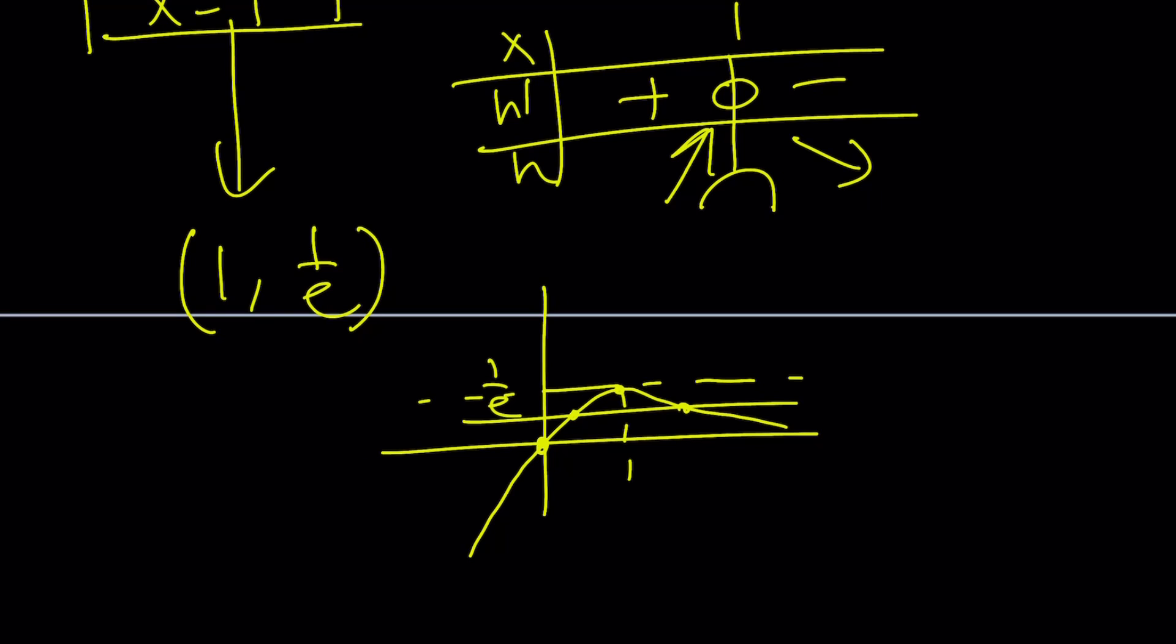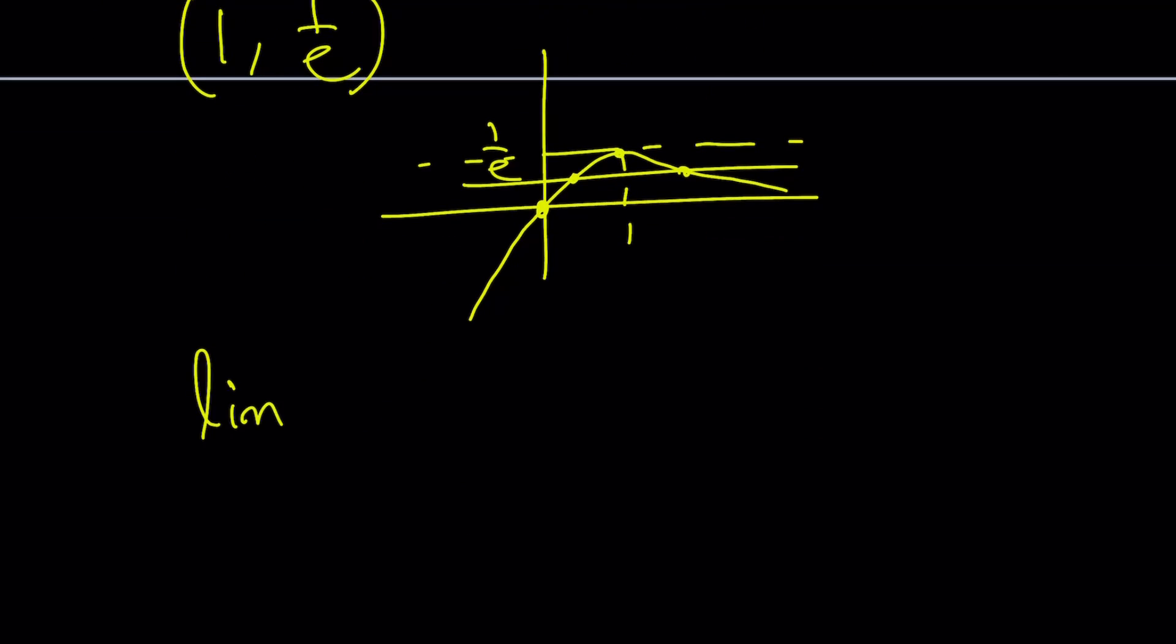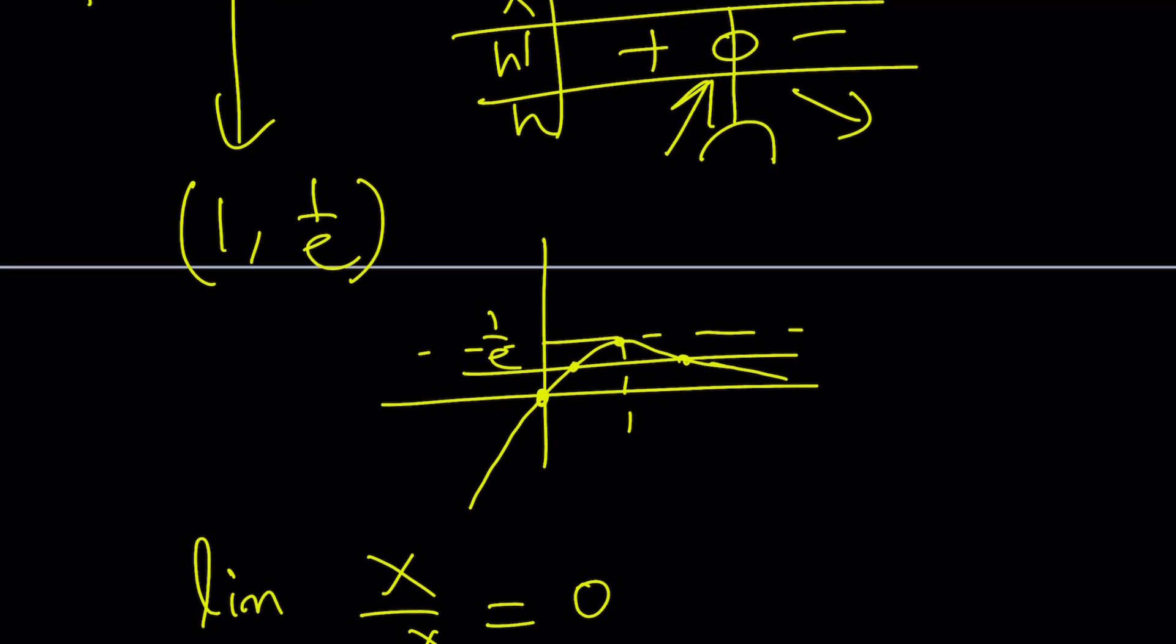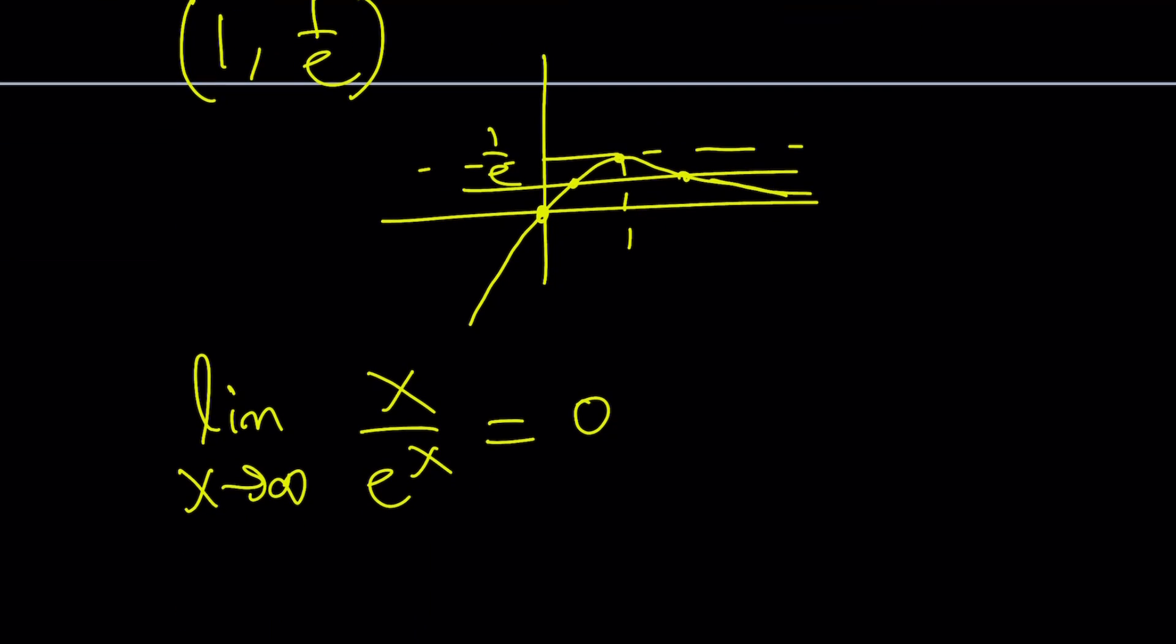So let's go ahead and look at the limit perspective here. Limit as x approaches infinity of x over e to the x. e to the x is exponential. It's going to grow faster than a polynomial. And this limit is going to be 0, which also kind of explains why our graph goes like this. We have a horizontal asymptote, which means it's not going to intersect. It's going to approach 0 as x approaches infinity. So our horizontal line is not going to intersect at two points at y equals 0, which is the x-axis.